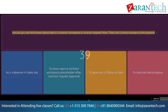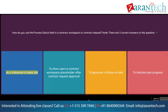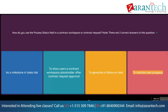Question: How do you use the process status field in a contract workspace or contract request? Note: there are two correct answers. Option 1: As a milestone in the tasks tab. Option 2: To show users a contract workspace placeholder after contract request approval. Option 3: To generate a follow-on task. Option 4: To indicate task progress.